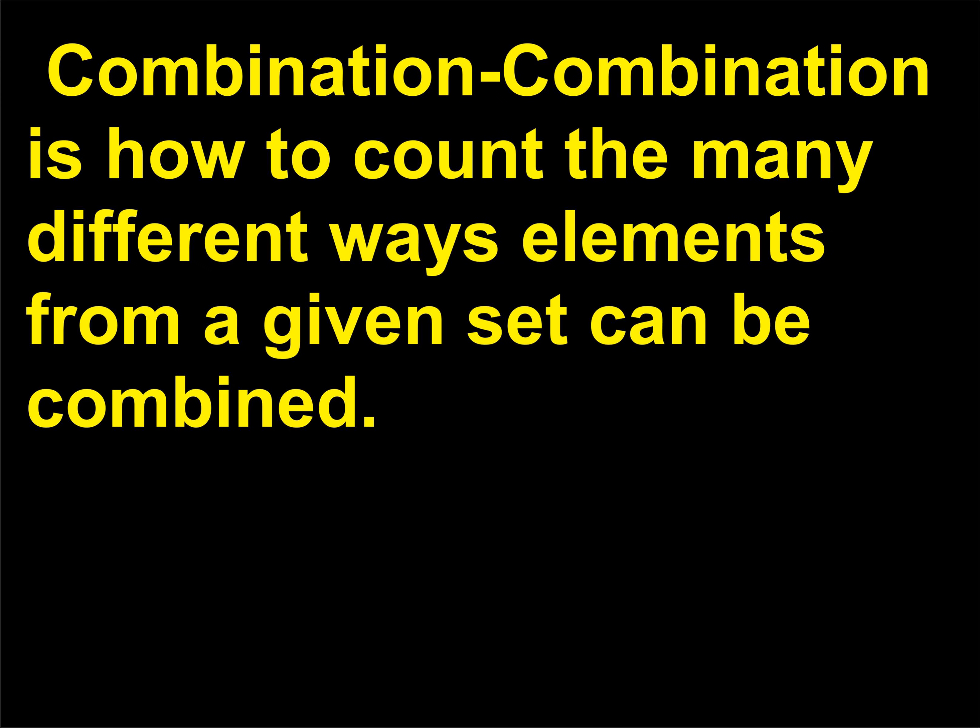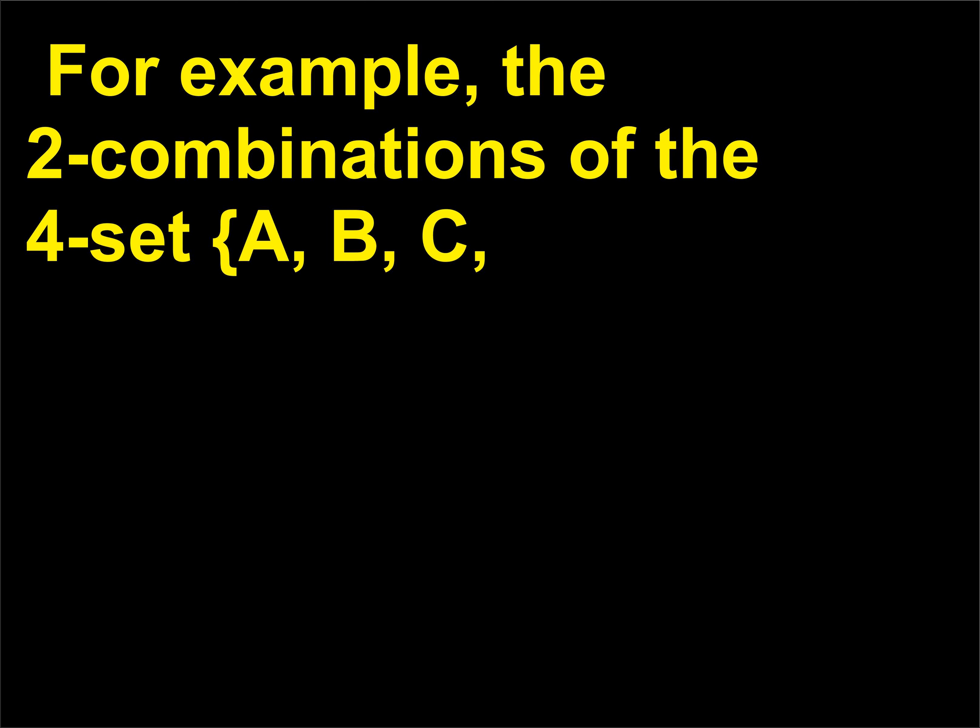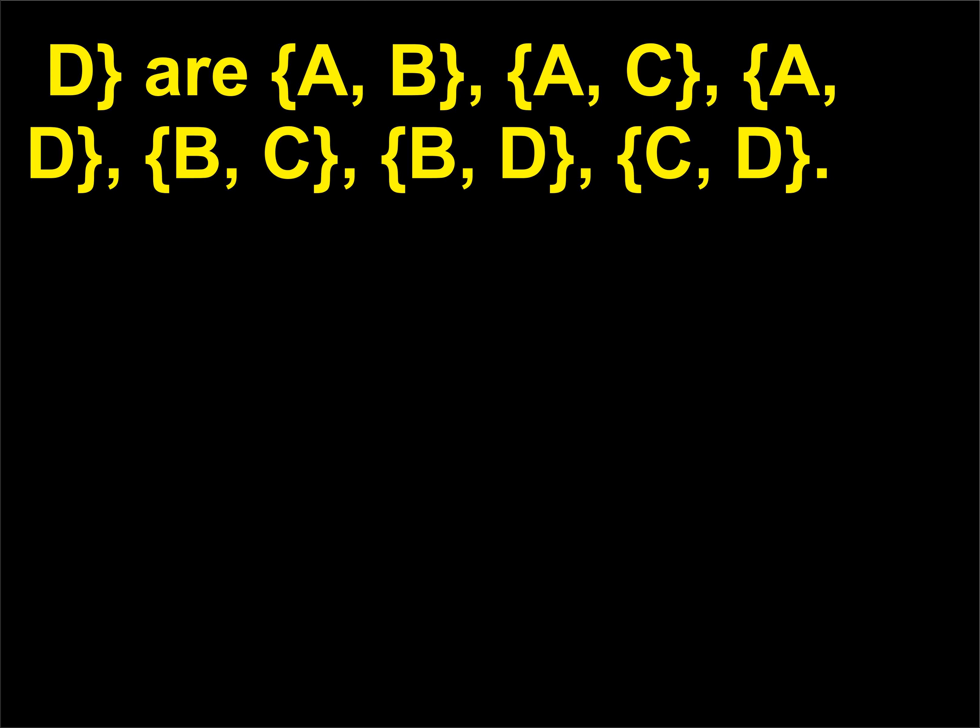Combination: how to count the many different ways elements from a given set can be combined. For example, the two-element combinations of the four-element set {A, B, C, D} are: AB, AC, AD, BC, BD, CD.